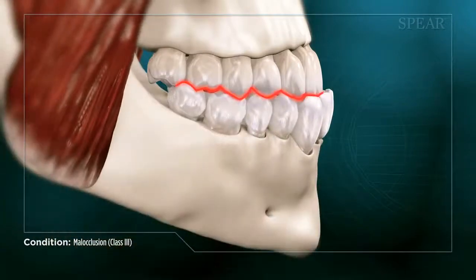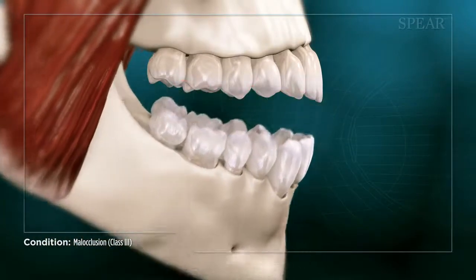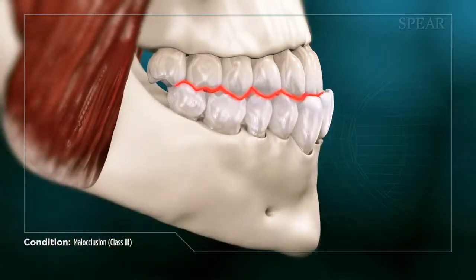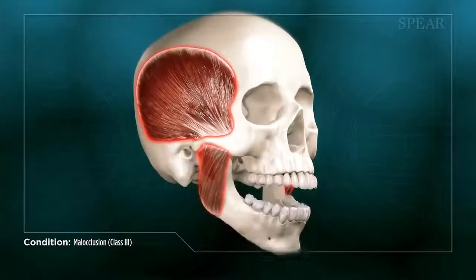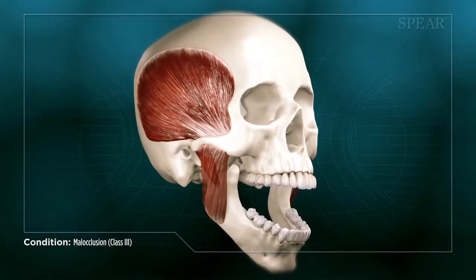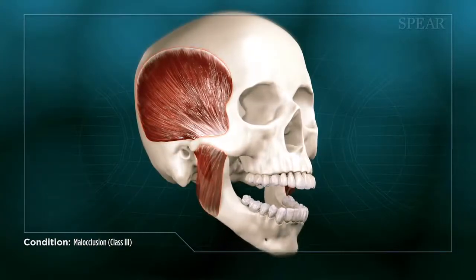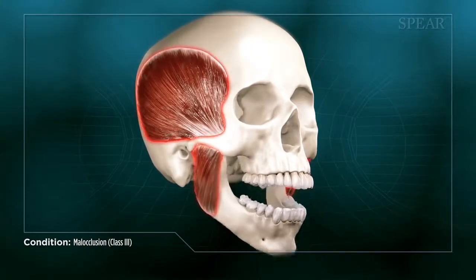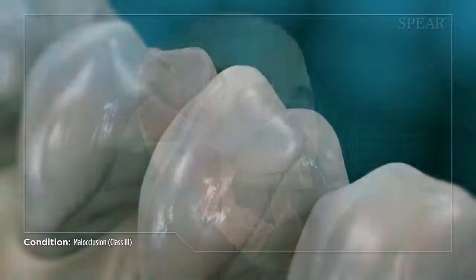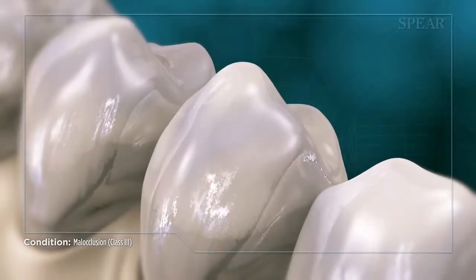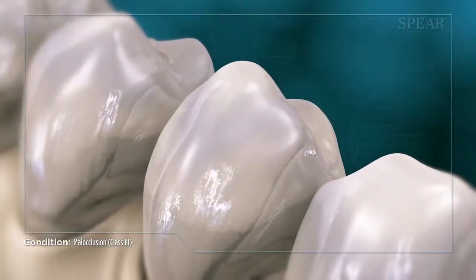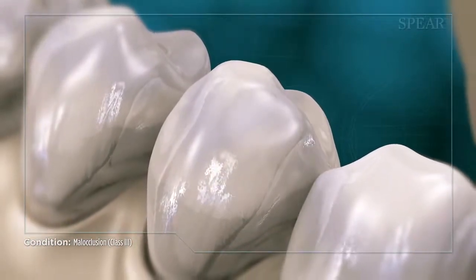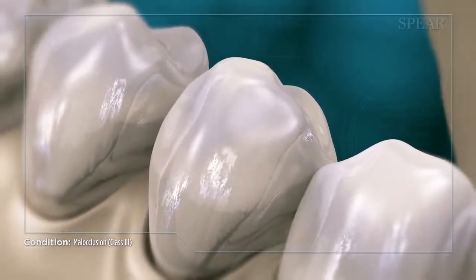Bite misalignment, or malocclusion, can result in a number of consequences as the teeth come into contact in unintended ways. These can include jaw and muscle pain, difficulty eating and speaking, excessive or uneven tooth wear, and cracking and potential loss of the affected teeth.